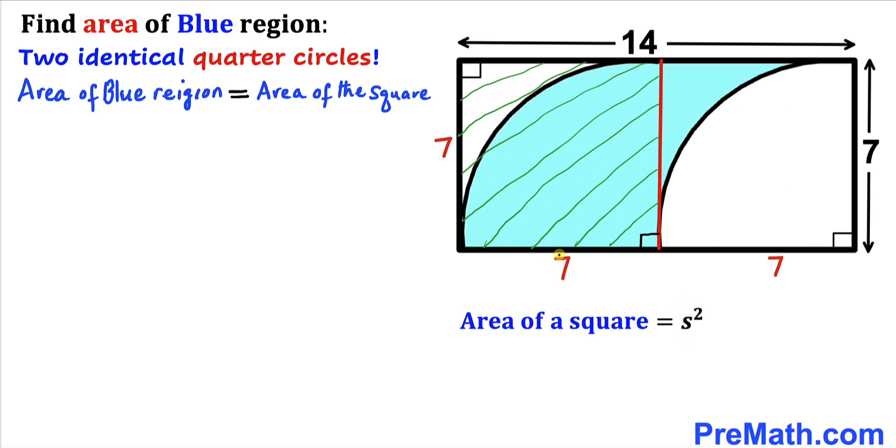In our case our side length is 7 units, so therefore the area of this square is going to be 7 whole squared and 7 squared is same as 49 square units. So therefore the area of this whole square turns out to be 49 square units.